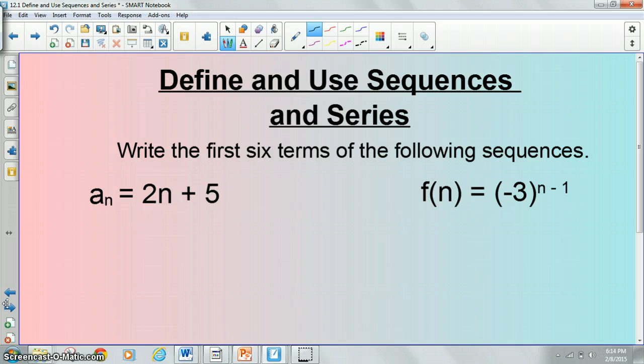Writing the first six terms of the following sequences, this is going to be like one of your homework types of questions. Notice these two things are very different notations. Here we have a sub n, meaning the nth term. Here we have f as a function of n, but it's the same process. So, you're trying to find the first six terms. The first term, a sub 1, the first, that's what that means, the first term, is 2 times 1. You're basically plugging in 1 wherever there's an n, plus 5.